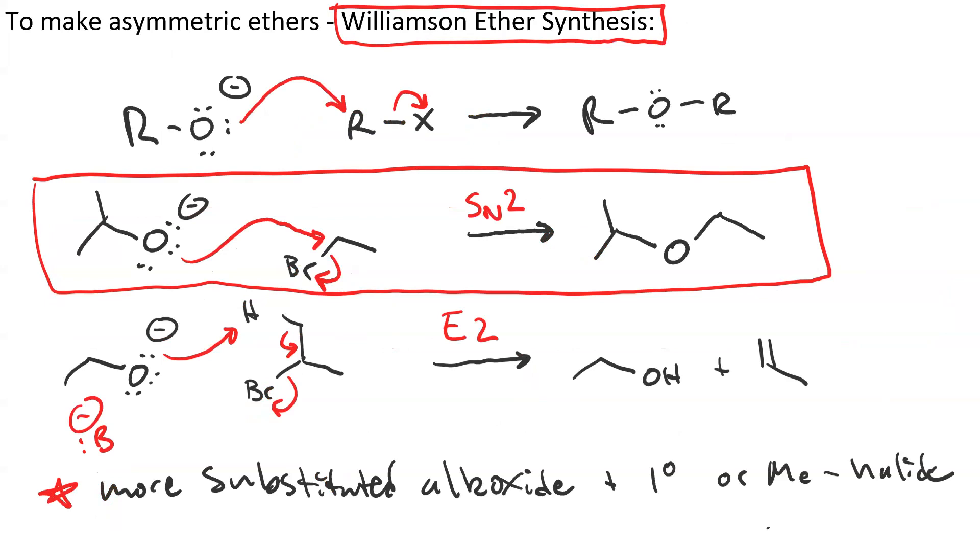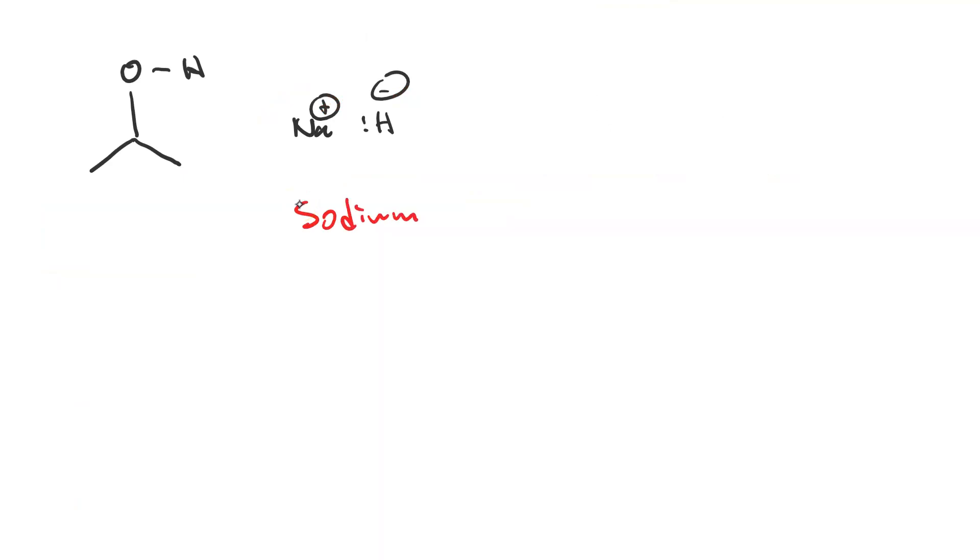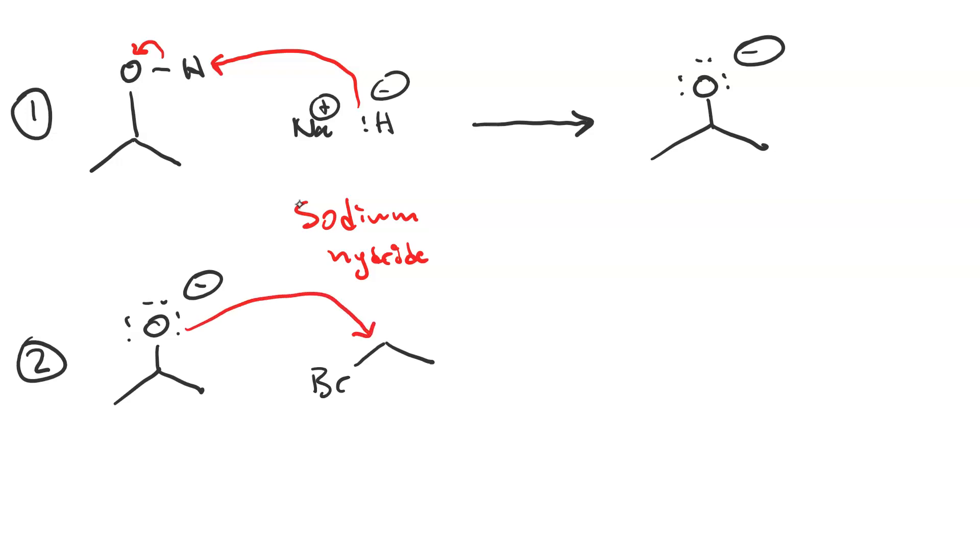To prepare the alkoxide, we'll use an alcohol plus sodium hydride. So we react isopropanol with sodium hydride. The hydride is a strong base, a non-nucleophile. So it does proton transfer. And we get isopropoxide. That's the first step. In the second step, we react that isopropoxide with a primary alkyl halide, like ethyl bromide. And it does SN2 attack. It gives us our desired ether.